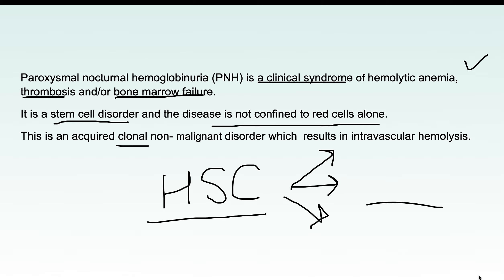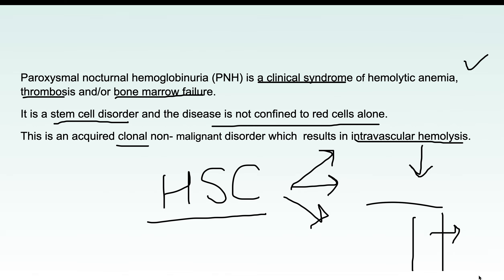An important point is that PNH leads to intravascular type of hemolysis. In intravascular hemolysis, the destruction of RBCs is taking place within the vessel itself — not in the reticuloendothelial system — meaning the RBCs are getting destroyed inside the vessel.